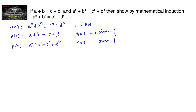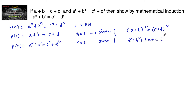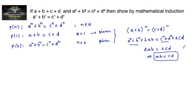From a + b = c + d, squaring both sides: (a+b)² = (c+d)², giving a² + b² + 2ab = c² + d² + 2cd. Since a² + b² = c² + d², we can write 2ab = 2cd, which implies ab = cd.